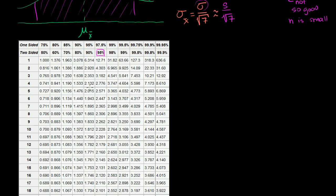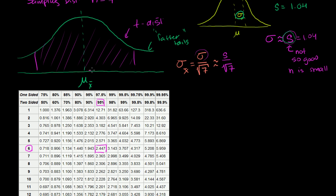To encapsulate 95% of the distribution with 6 degrees of freedom, you have to go 2.447 standard deviations in each direction. The t-table assumes you are approximating that standard deviation using your sample standard deviation. So you have to go 2.447 of these approximated standard deviations. Sometimes in statistics books this is written with a little hat on top of the standard deviation to indicate it has been approximated using the sample standard deviation.